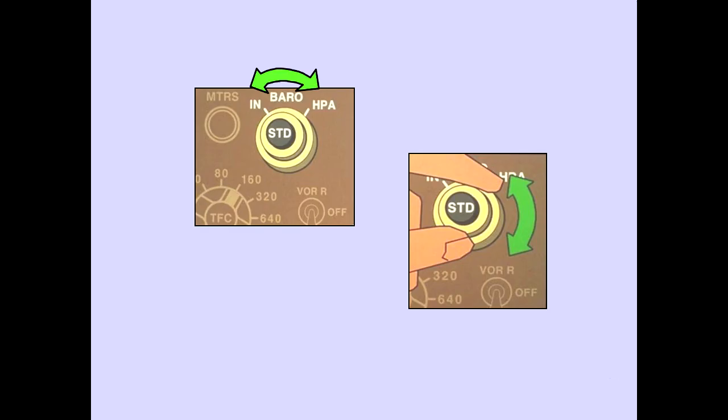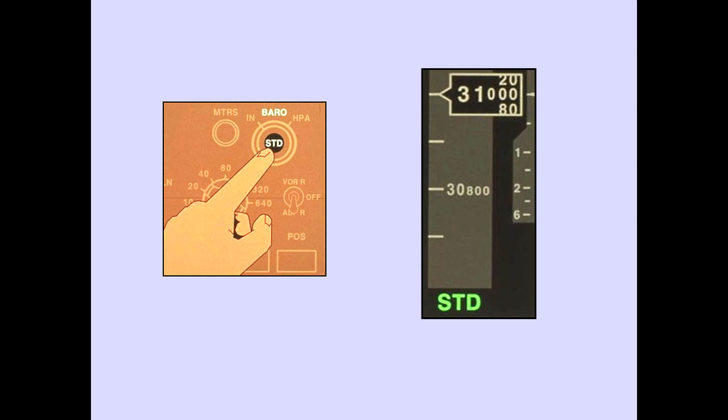Rotating the outer barometric selector selects inches of mercury or hectopascals as the barometric pressure reference. Rotating the middle barometric control sets the desired pressure. The set pressure is displayed on the respective PFD. Pressing the inner switch automatically selects the standard pressure, and STD will be displayed below the altitude indication.